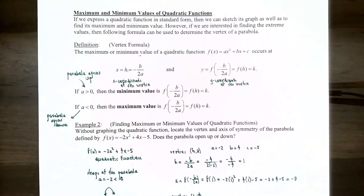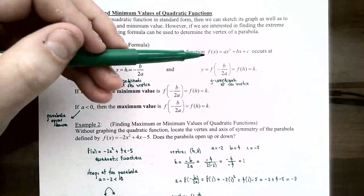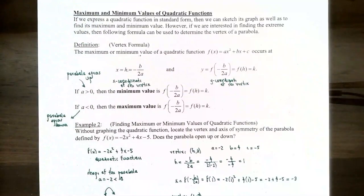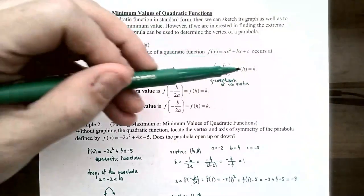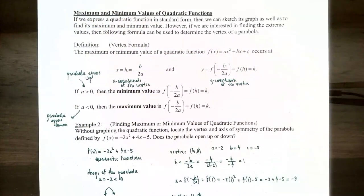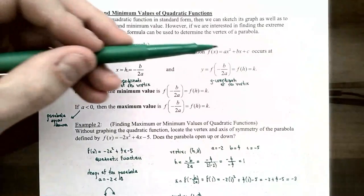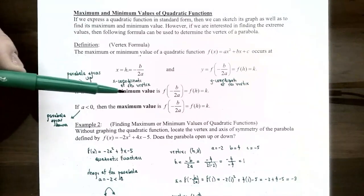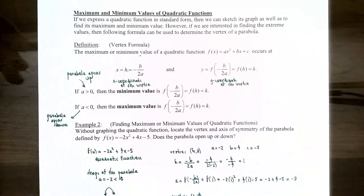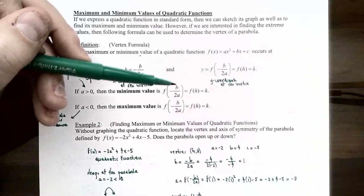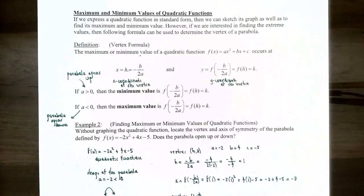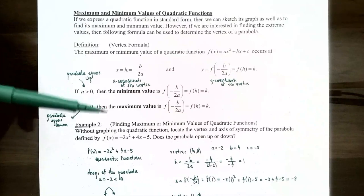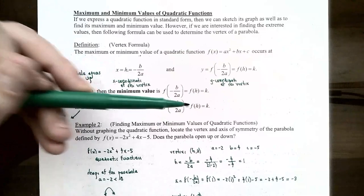To find the y-coordinate, you substitute the x-coordinate of the vertex — that is, negative b over 2a — into your function to get f of negative b over 2a, which gives you k, the y-coordinate of the vertex. If a is positive, the parabola opens up, the vertex is a local minimum point, and the minimum value is f of negative b over 2a. If a is negative, the parabola opens down, the vertex is a local maximum point, and the maximum value is f of negative b over 2a.